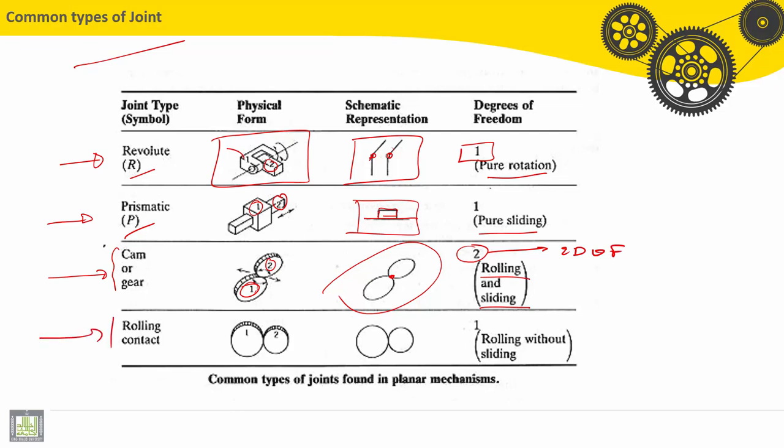Last one, rolling contact. Between two cylinders, for example, cylinder number one, cylinder number two. So the contact here is a line. We have rolling without sliding, a pure rolling. Then it will be one degree of freedom.